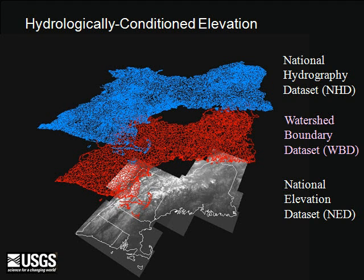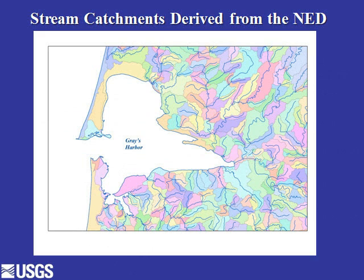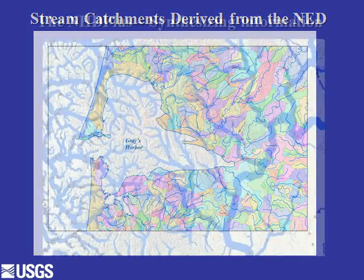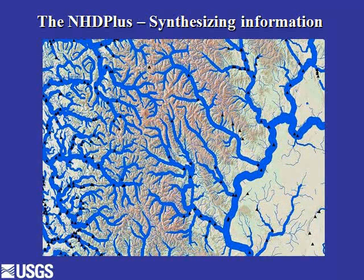This works by taking the National Hydrography Dataset, the Watershed Boundary Dataset, and the National Elevation Dataset and combining them to create catchments — multicolored polygons where each individual stream segment has its own drainage area. That drainage area can be intersected with other data such as precipitation, temperature, elevation, slope, land cover, forest cover, agriculture, and urban area. Using modeling techniques, we can predict how much water will be in each stream segment and represent that amount using line width.